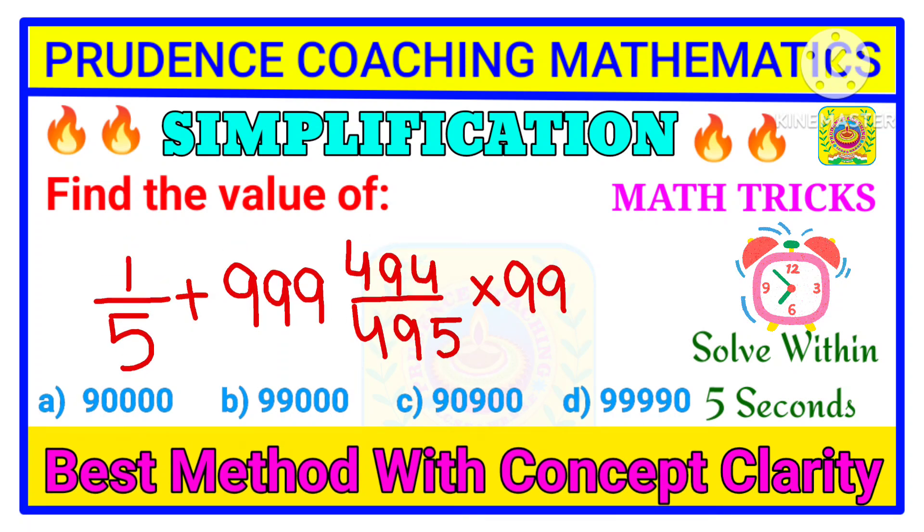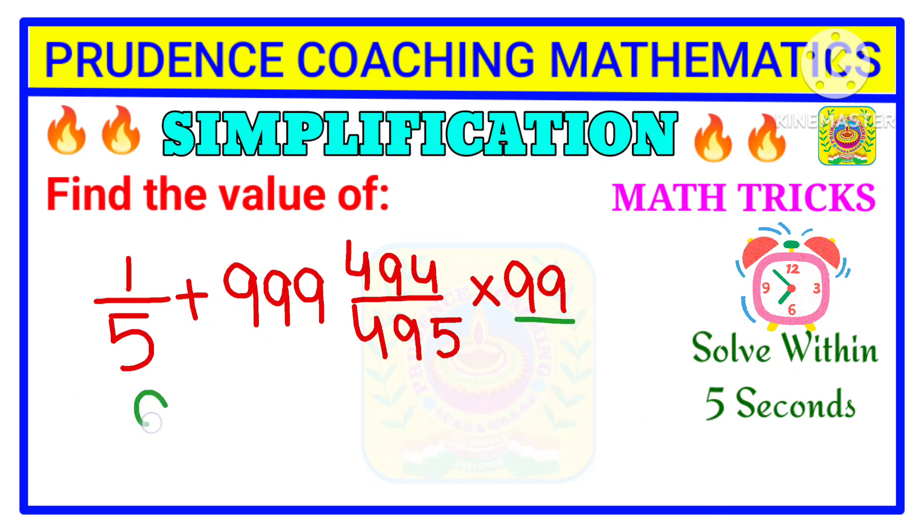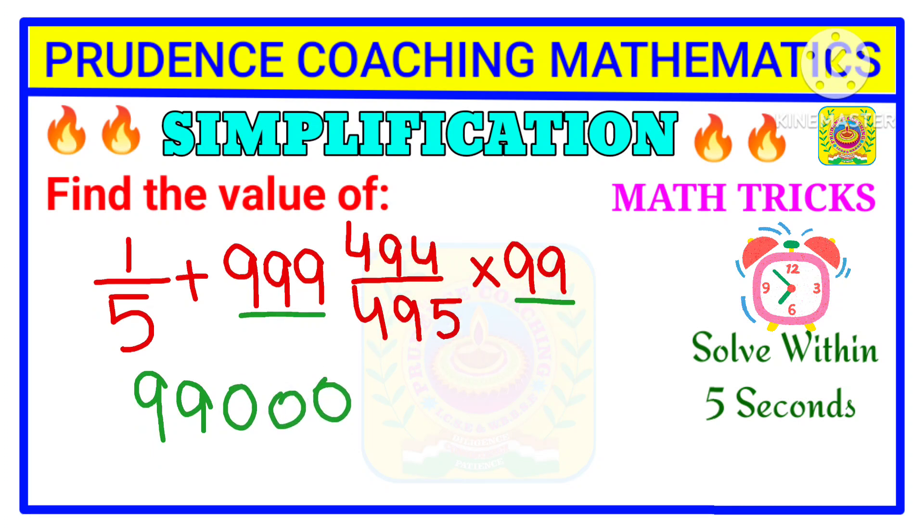So here, how many nines are there? Two nines are there on the right hand side. So in your answer also, you will get two nines. Here on the left hand side you have three nines, so in your answer you will get three zeros. So this is your answer.